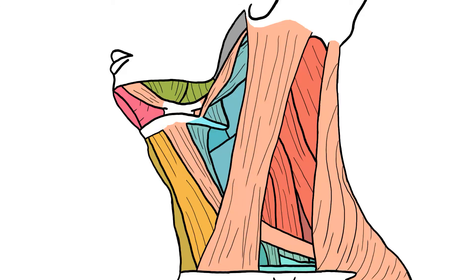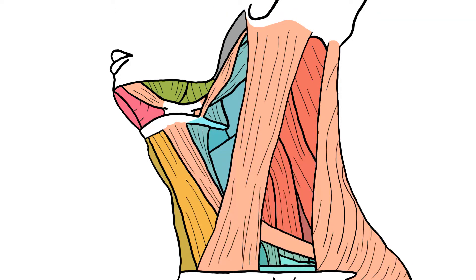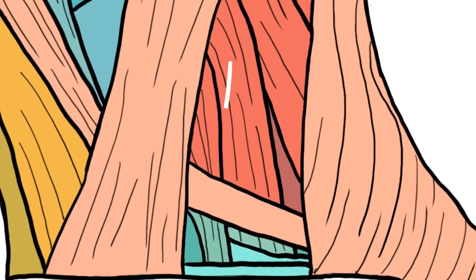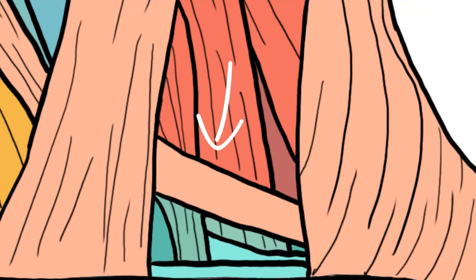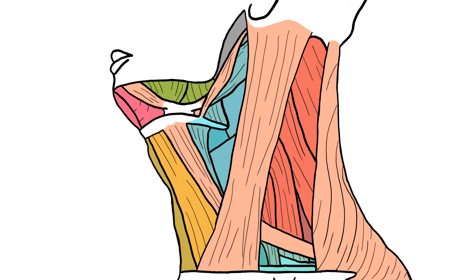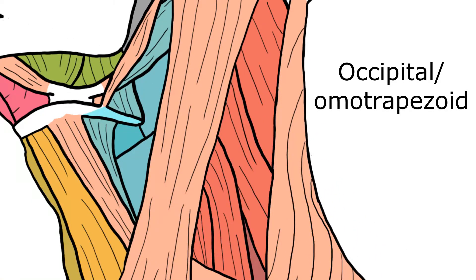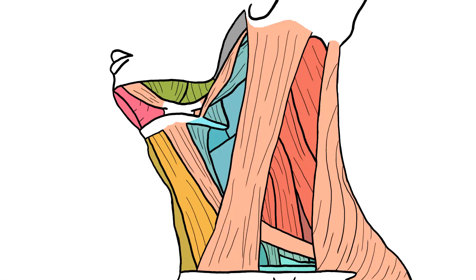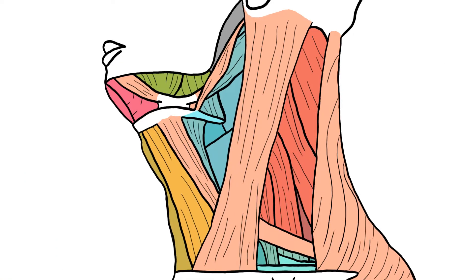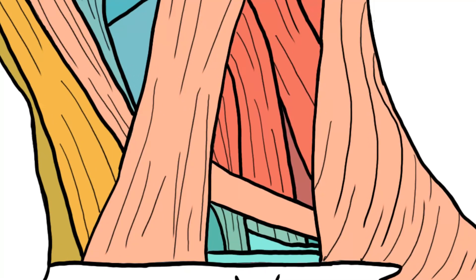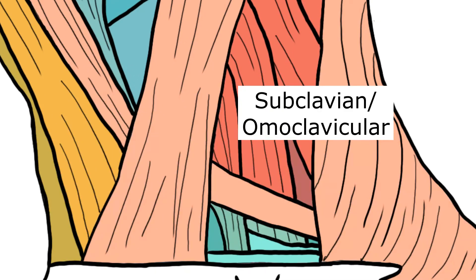In this region, we've got the lateral triangle of the neck, and this triangle is split into two triangles by the inferior belly of the omohyoid muscle. The larger portion on the top is known as the occipital triangle or the omotrapezoid triangle, and the smaller one on the bottom is known as the subclavian triangle or the omoclavicular triangle.